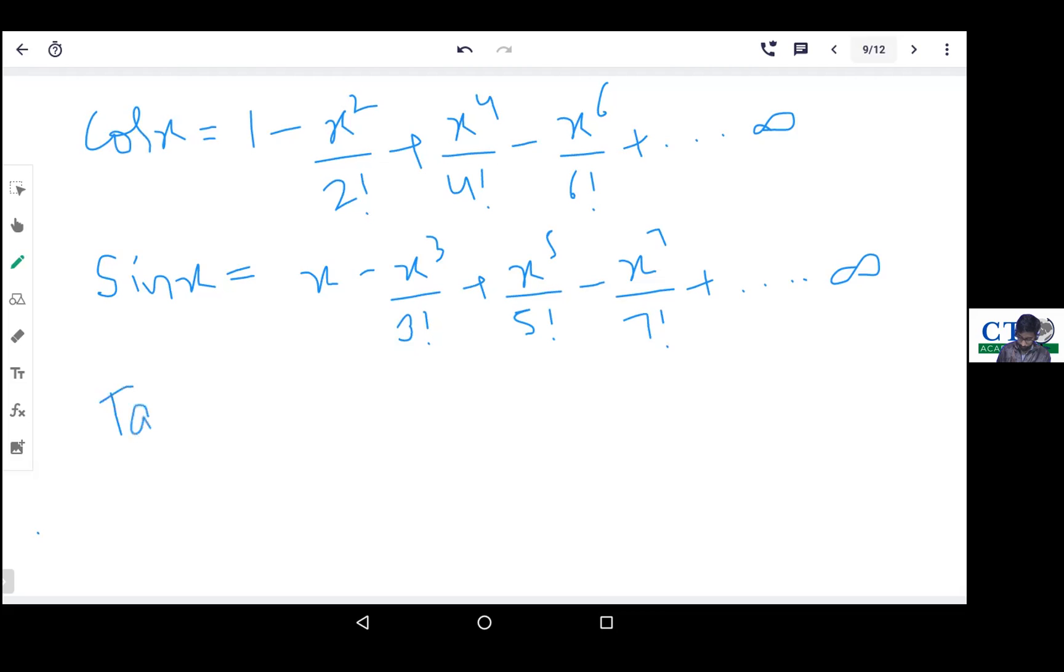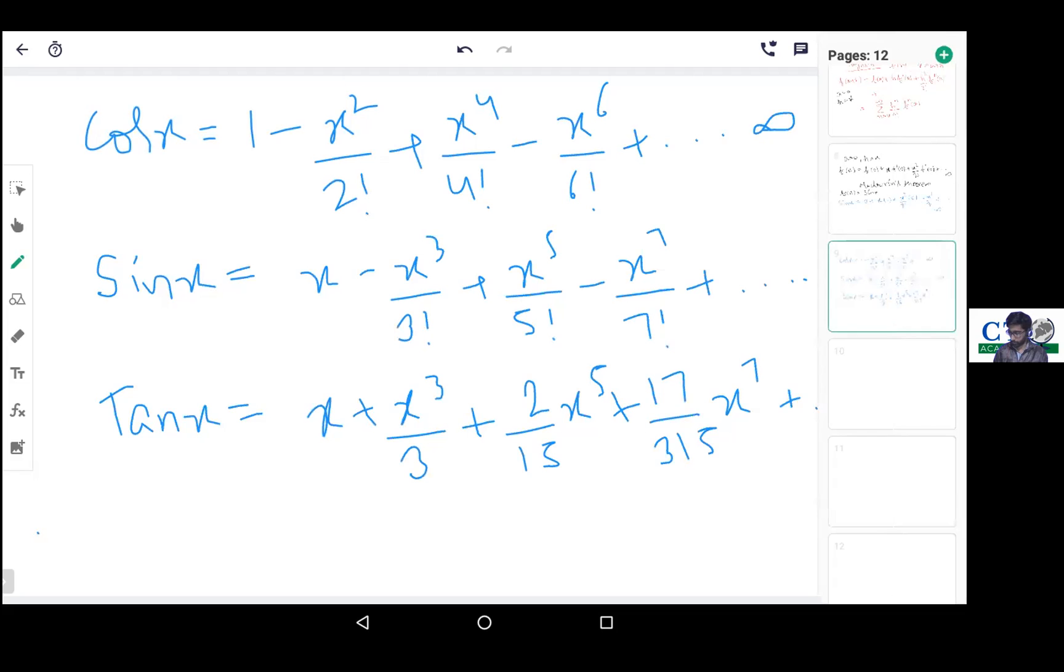Next, tan(x) expansion: x plus x cube upon 3 plus 2 upon 15 times x to the power 5 plus 17 upon 315 times x to the power 7, and so on. If we need tan(x) expansion, these three or four terms are usually sufficient and important.